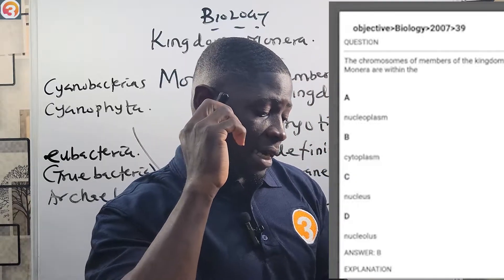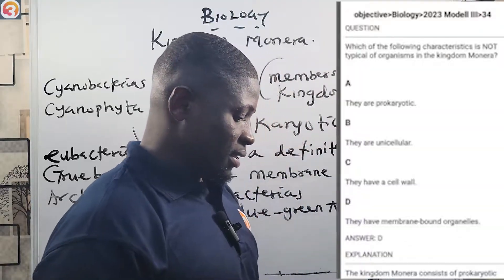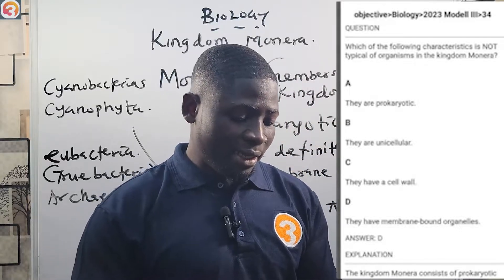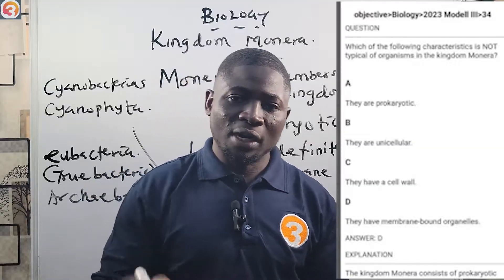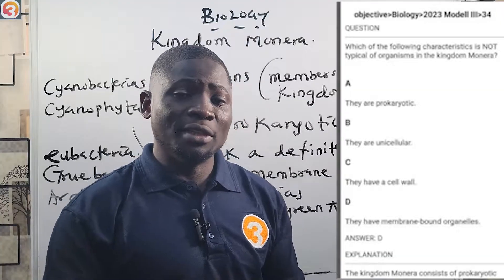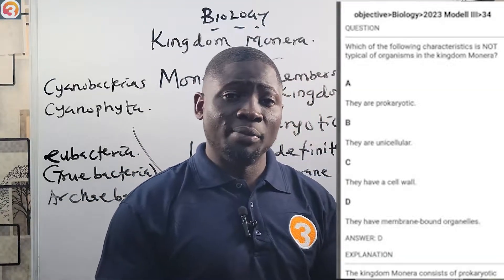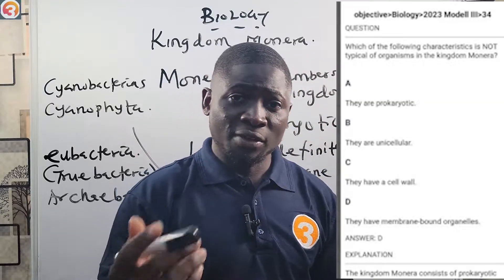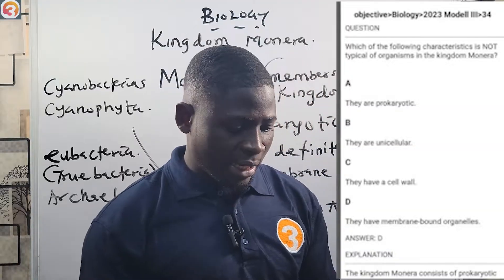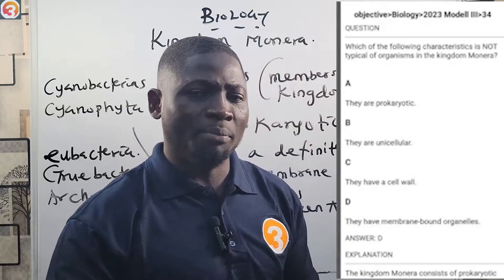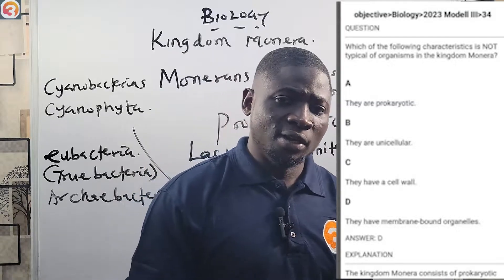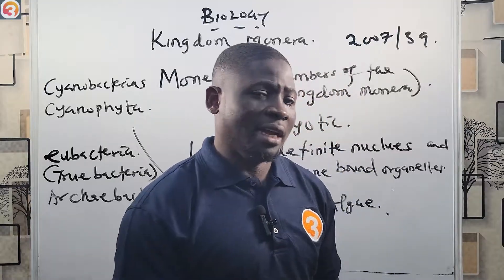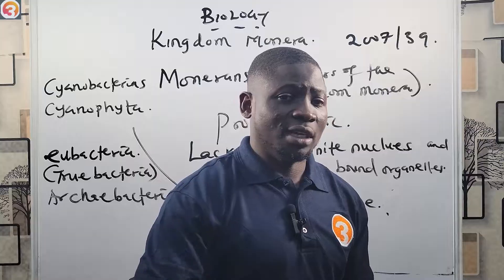The 2023 model paper, number 34, asks: 'Which of the following characteristics is NOT typical of organisms in Kingdom Monera? a) They are prokaryotic, b) they are unicellular, c) they have a cell wall, d) they have membrane-bound organelles.' Since monerans are prokaryotic, they do not have membrane-bound organelles. So the correct answer is D — they have membrane-bound organelles — because this is NOT typical of them.